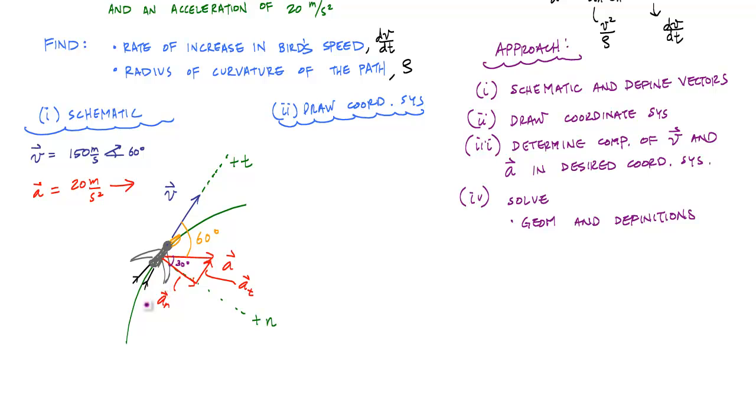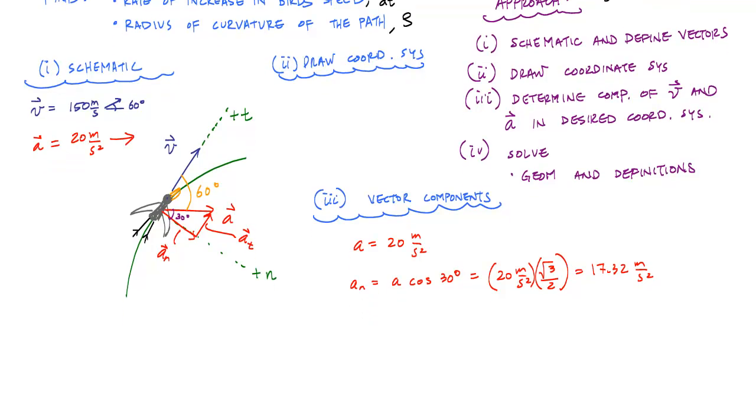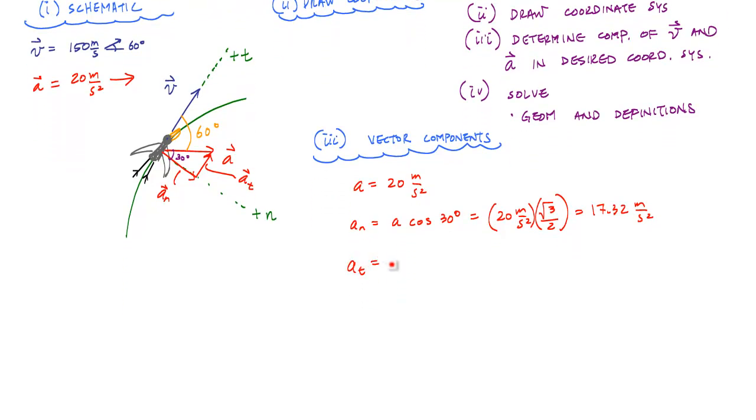Now, I can calculate the magnitudes of these components. And knowing what I know about the magnitude of the acceleration vector, which is 20 meters per second squared, I know that the normal component is equal to a cosine of 30 degrees. And this would tell me that I have 17.32 meters per second squared in the normal direction. And my tangential component, a_t, is equal to a sine of 30. That is just 10 meters per second squared.